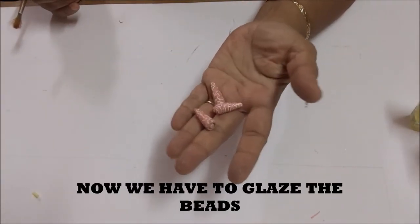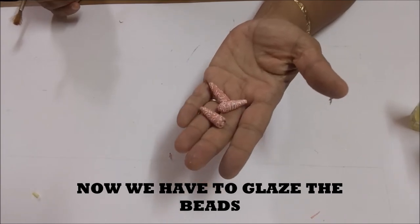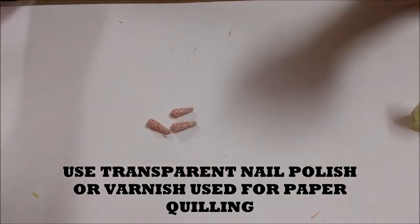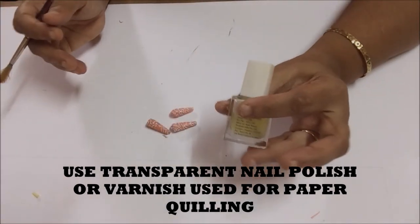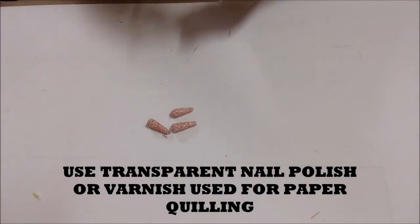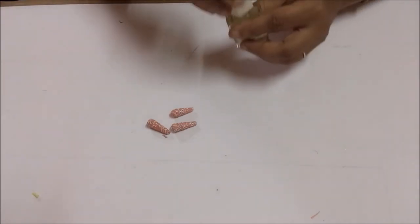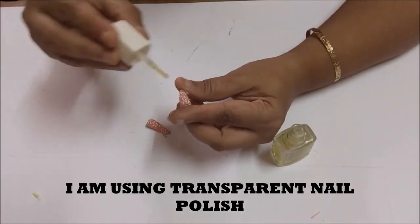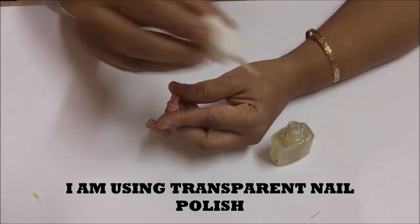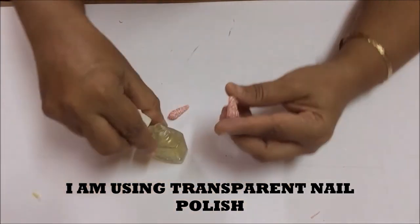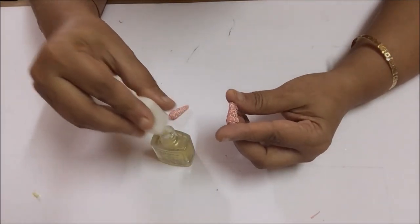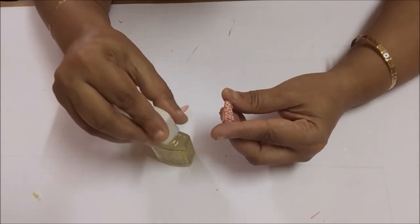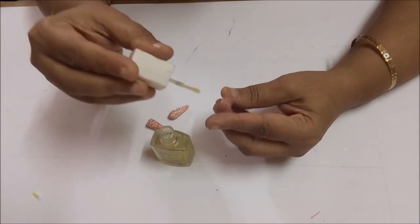We can glaze them with transparent nail polish or a glaze that we use for quilling jewelry. So I'll be doing it with nail polish. Give at least 2-3 coats so that they become hard and shiny.